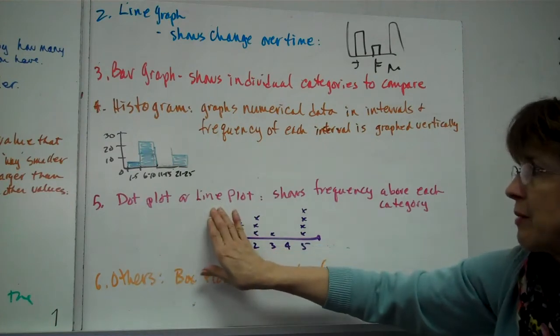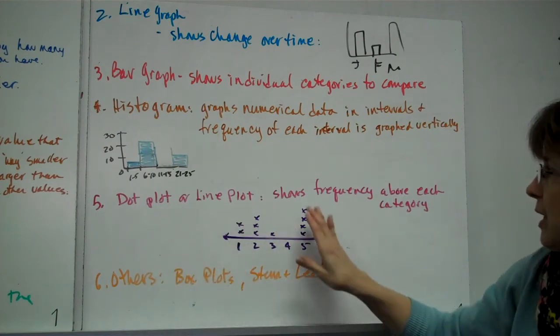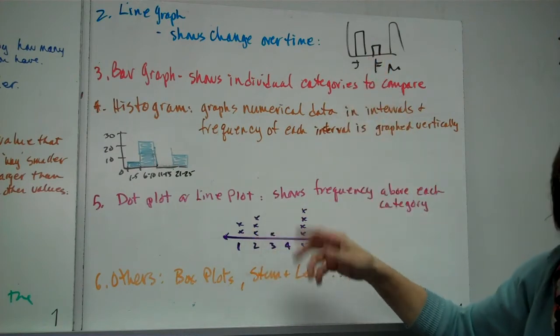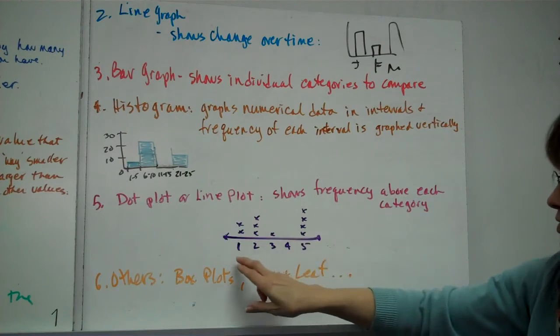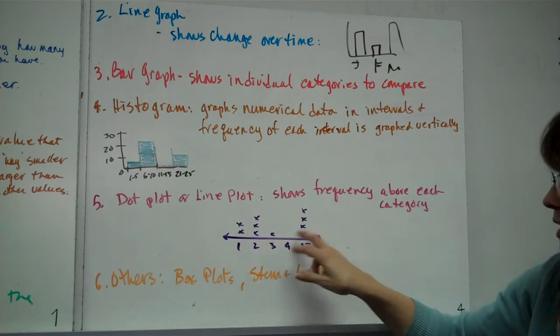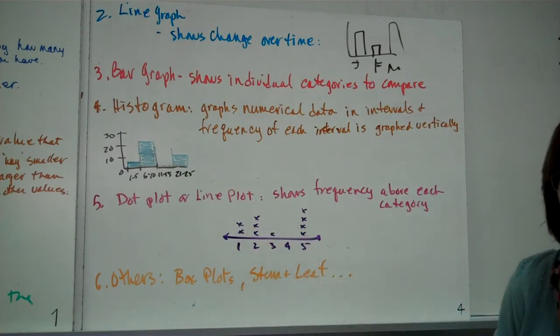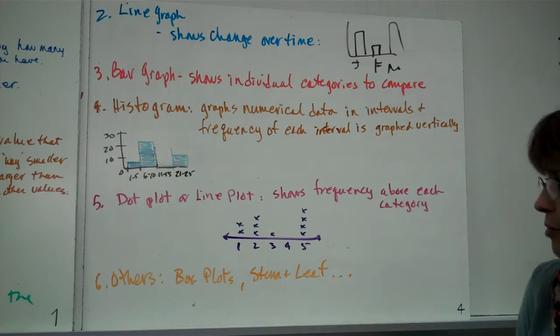5. Is it a dot plot or a line plot? And again, you probably have done this one. It's kind of like a bar graph, really. You just put bars here and make it a bar graph. But it shows a frequency above each category. Supposing you're rolling dice again or something. You did a 1 twice, a 2, 3 times. I didn't put 6, but you understand that that would be one example of a dot plot or a line plot.